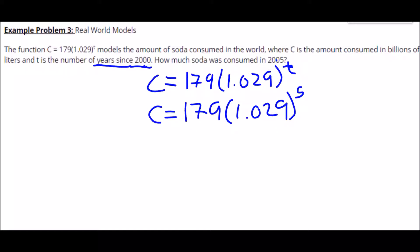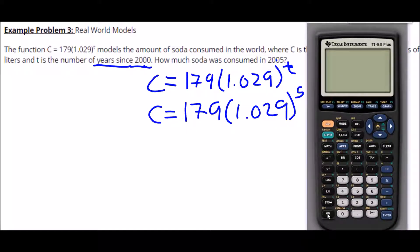So I'm going to pull up a calculator and on this calculator all we have to plug in is this expression: 179 times 1.029 to—and I like to put parentheses around my exponents—the fifth power.